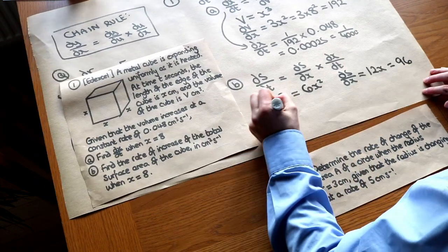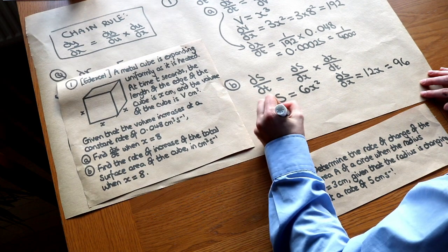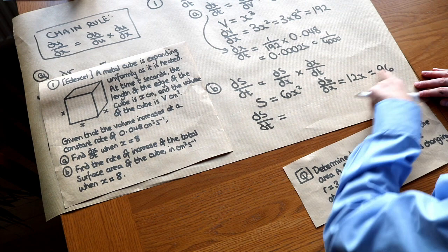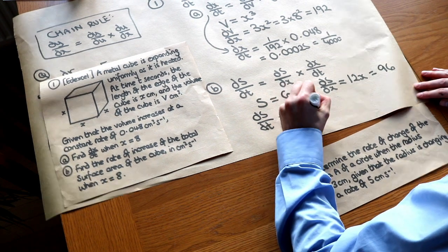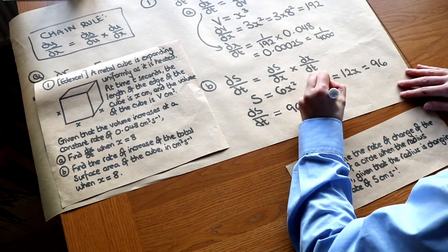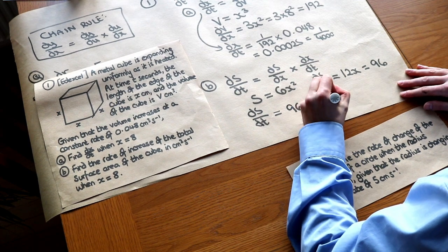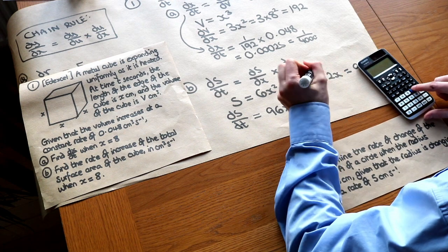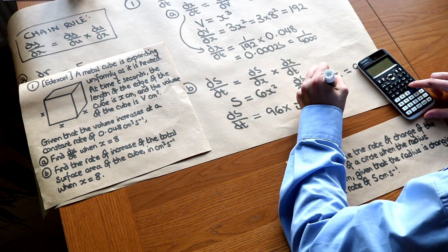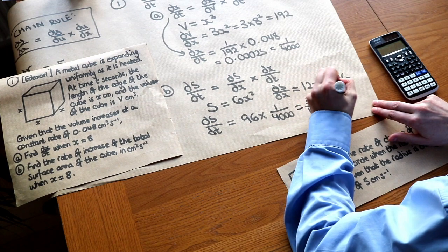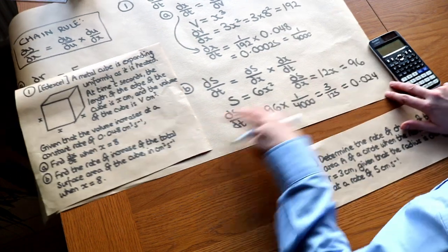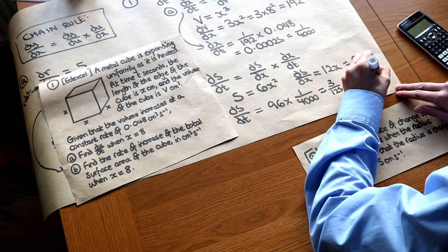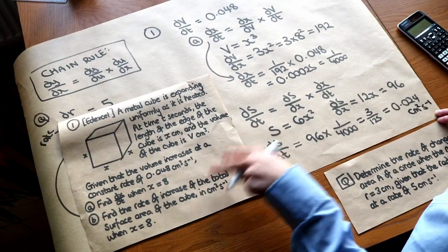ds over dt is equal to ds over dx, which we worked out was 96, times by the dx over dt, which we worked out in part A, was 1 over 4,000. If we put that on our calculator, we get 3 over 125, or if we prefer as a decimal, 0.024, and we might as well put the unit, it's centimeters squared per second. And that is it.